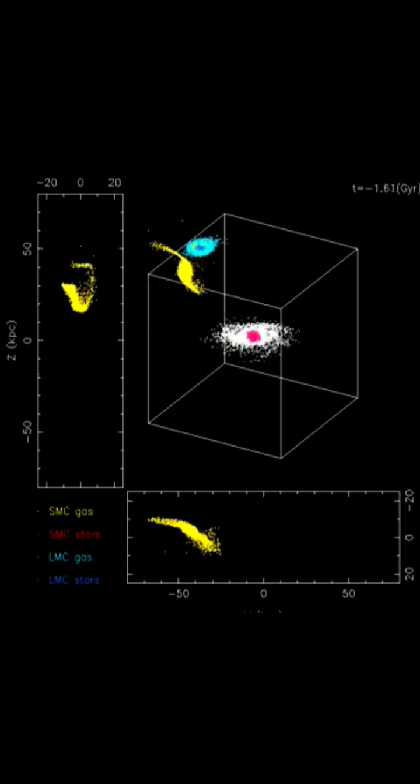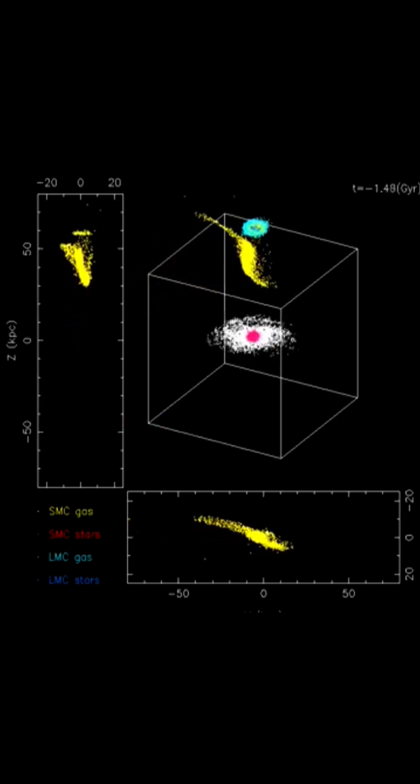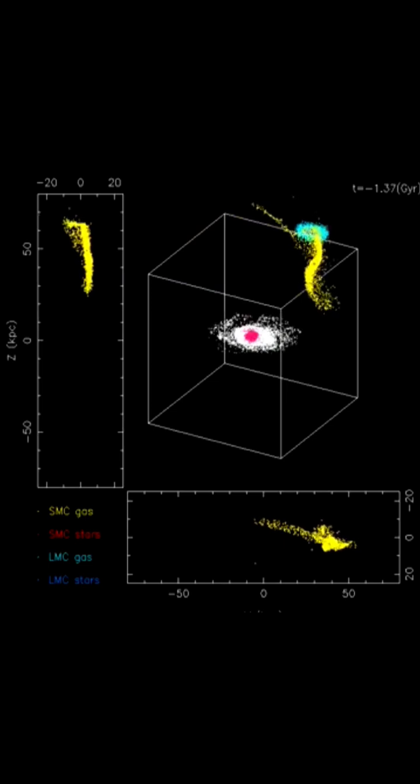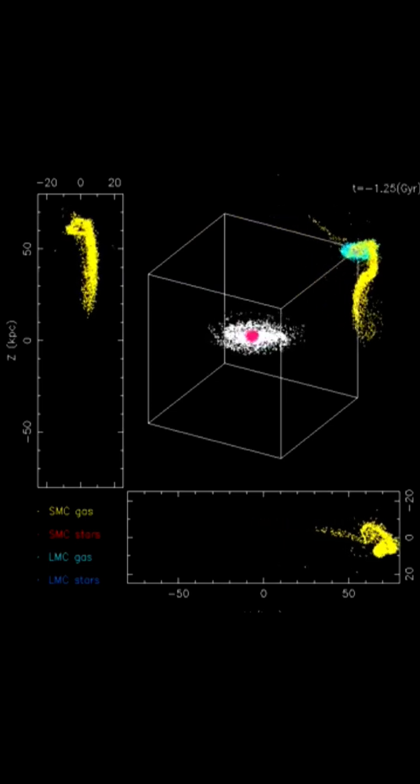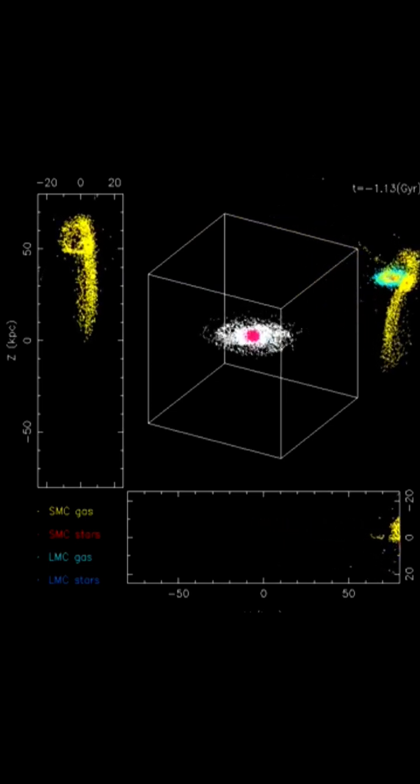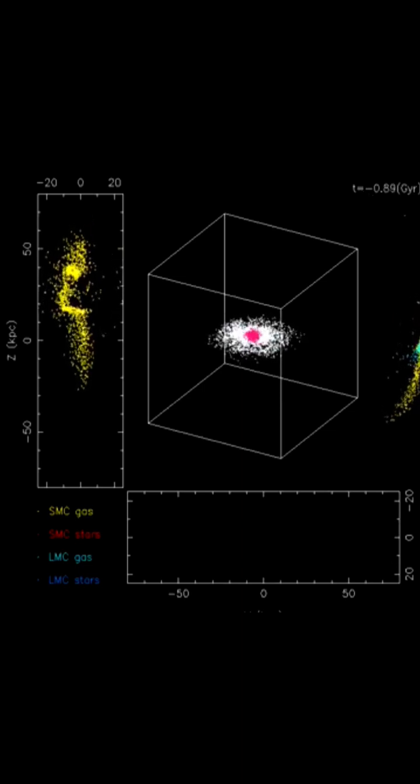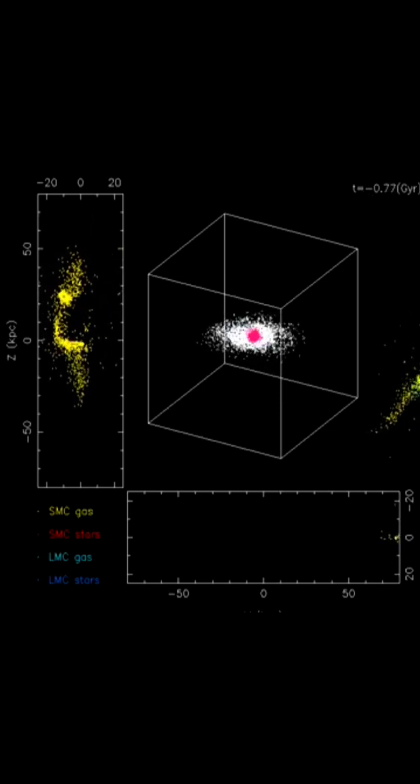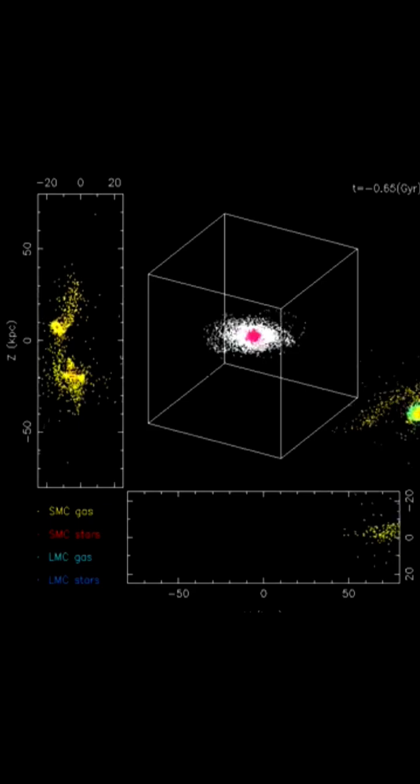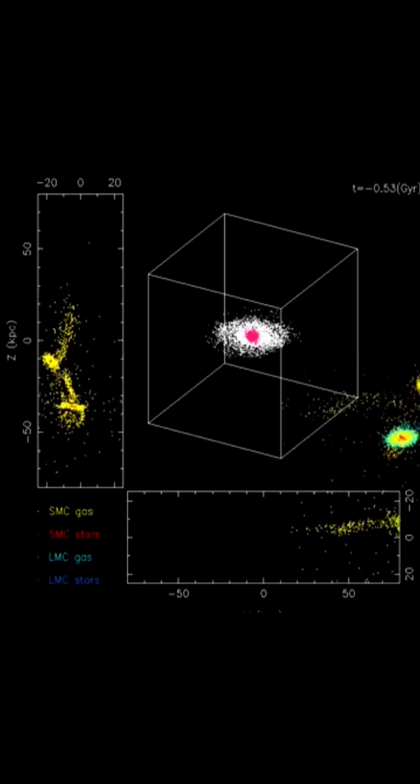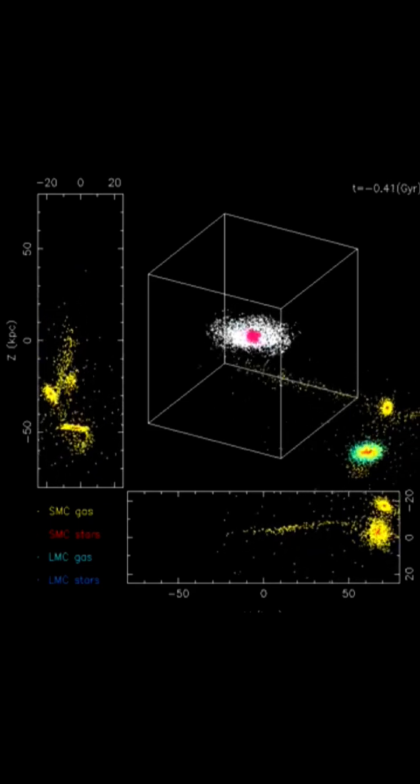Even crazier, scientists think this stream may be a sign that the Large Magellanic Cloud is slowly being pulled into the Milky Way's gravity, setting up a future galaxy collision that could reshape the night sky millions of years from now. We are literally connected to another galaxy by a bridge of life-giving gas.